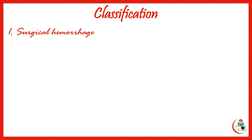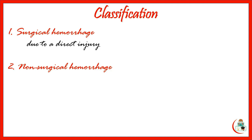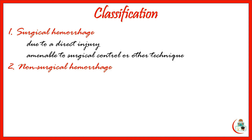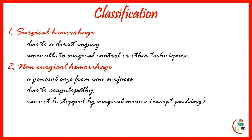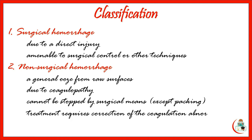Hemorrhage may also be classified into surgical and non-surgical hemorrhage. Surgical bleeding occurs due to direct injury, including surgical trauma, and is amenable to surgical control or other techniques such as embolization. Non-surgical hemorrhage is a general ooze from a raw surface due to coagulopathy. It cannot be stopped by surgical means except by packing, and treatment requires correction of the coagulation abnormalities.